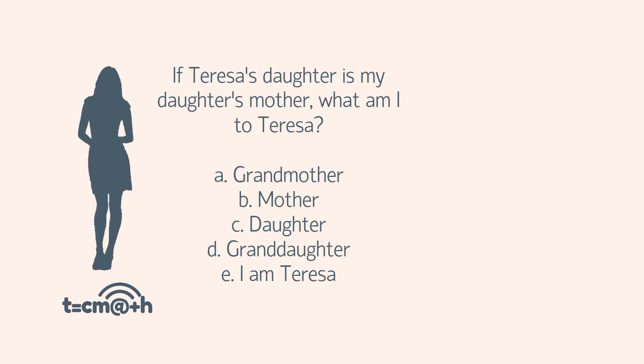This is the third and final riddle we are going to be having a look at. I've left it to last because it's one that happens to be making its way around the internet. And this is the riddle: if Teresa's daughter is my daughter's mother, what am I to Teresa? Options are: A, her grandmother; B, her mother; C, her daughter; D, her granddaughter; or E, I am Teresa. Pause the video once again, and if you'd like to see how to solve it, start up again.